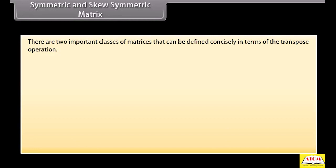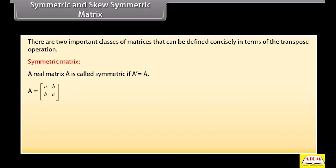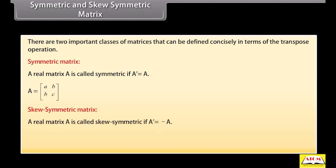Symmetric and skew-symmetric matrix: There are two important classes of matrices that can be defined concisely in terms of the transpose operation. A real matrix A is called symmetric if transpose of A equals A. A is a general two-by-two symmetric matrix. A real matrix A is called skew-symmetric if transpose of A equals minus A, and A is a general two-by-two skew-symmetric matrix.